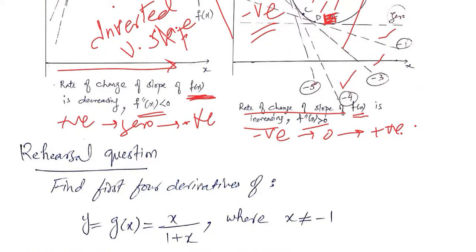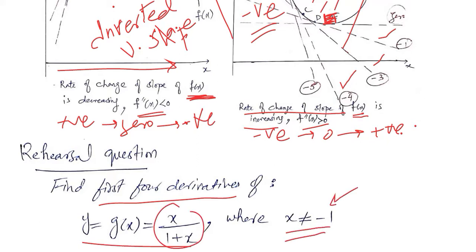As a practice question, you can find the first four derivatives of the given function, with the stipulation that x is not equal to minus one — because if x equals minus one, this term reduces to zero and the whole function becomes undefined, which is not economically meaningful. Therefore we assume x is not equal to minus one. In this way, second order derivatives and higher order derivatives can be used to make sense of various functions.